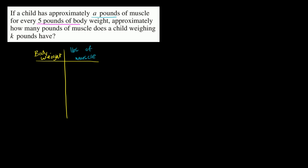So if a child has a body weight of five pounds, then you're going to have eight pounds of muscle — that's what they told us.